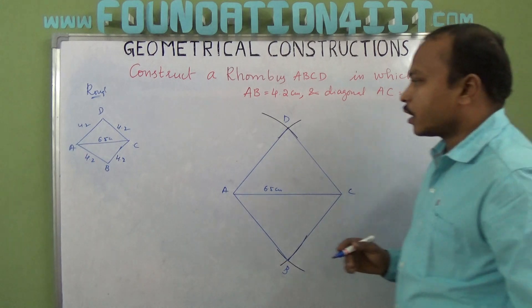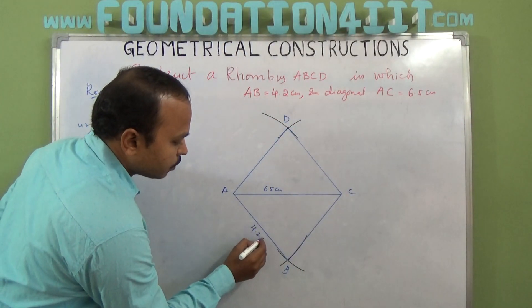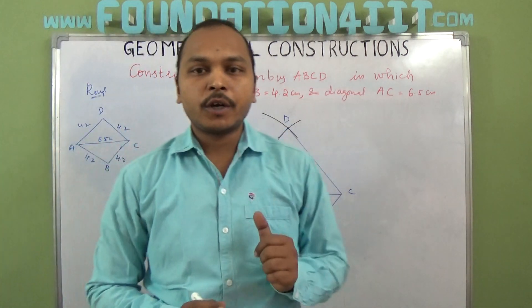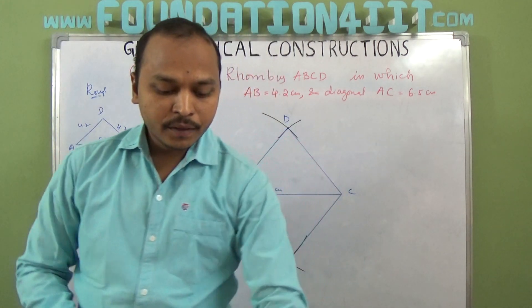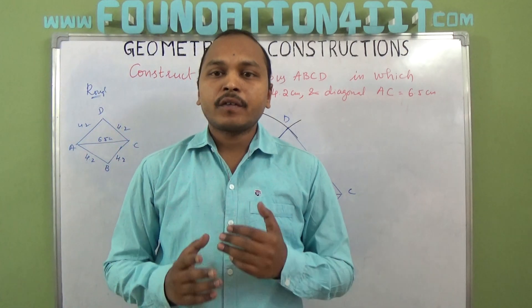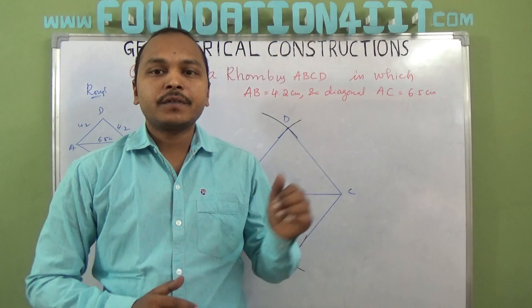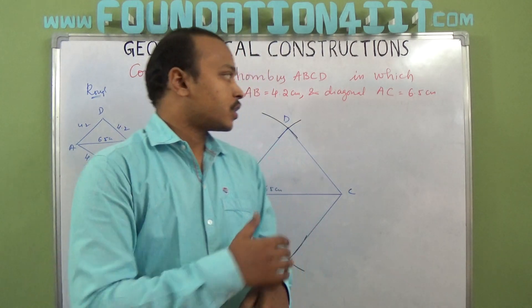Each and every side is equal. A to B is 4.2 centimeters and AC is 6.5 centimeters. The diagonal is given and one side is given. This way we can construct a rhombus when one side and one diagonal are given.